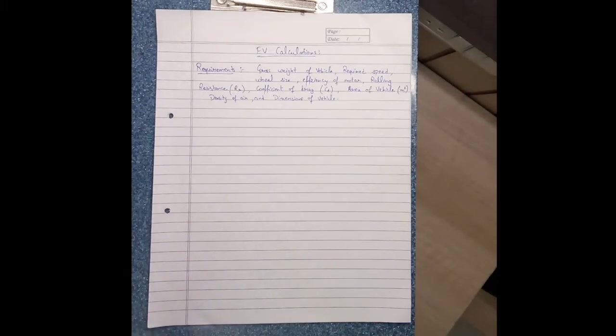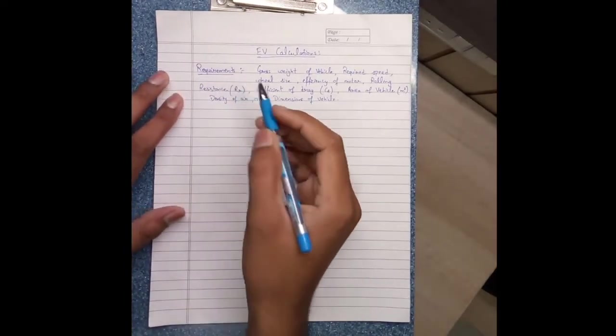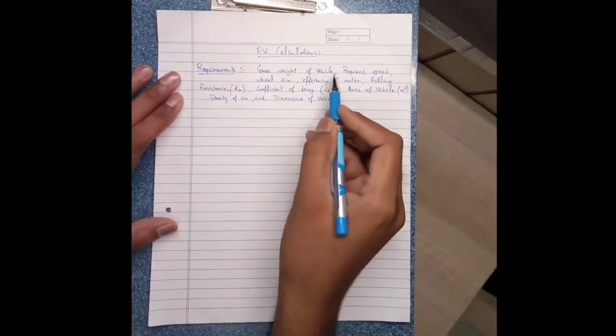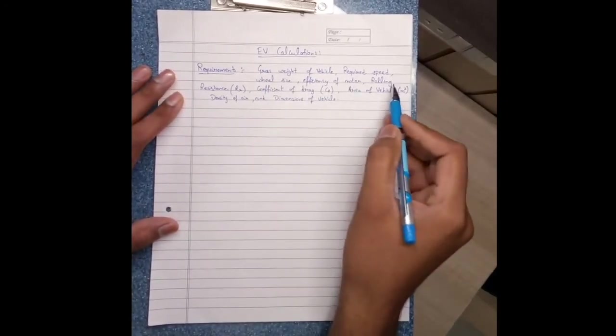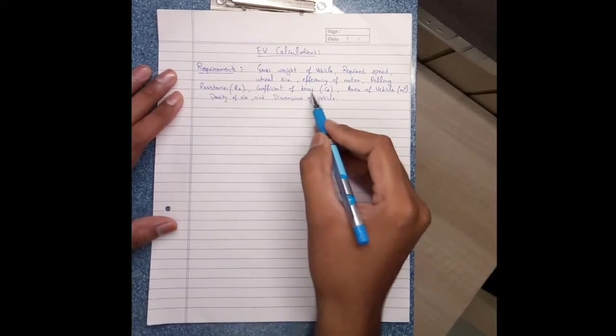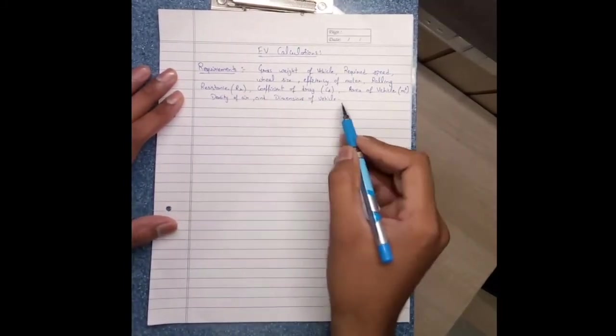Hello friends, welcome back to my channel. Today we start with important calculations that are required before starting any electrical vehicle project. Let's start. Firstly, these are the requirements that we need: gross weight of vehicle, required speed, wheel size, efficiency of motor, rolling resistance, coefficient of drag, area of vehicle, density of air, and dimensions of vehicle.